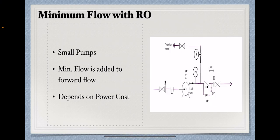Now, there are three options normally provided for minimum flow recirculation line. The first one is the minimum flow with the restriction orifice.